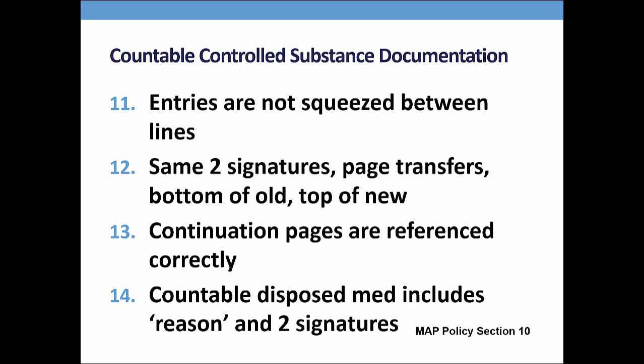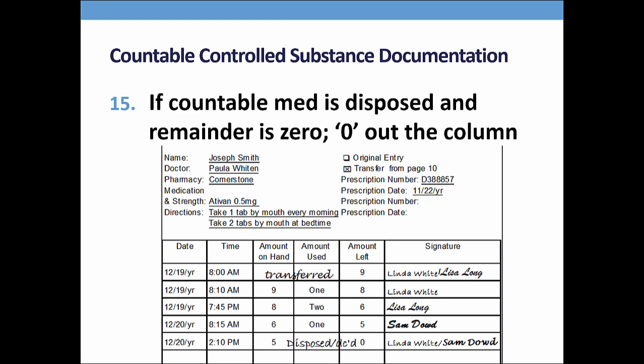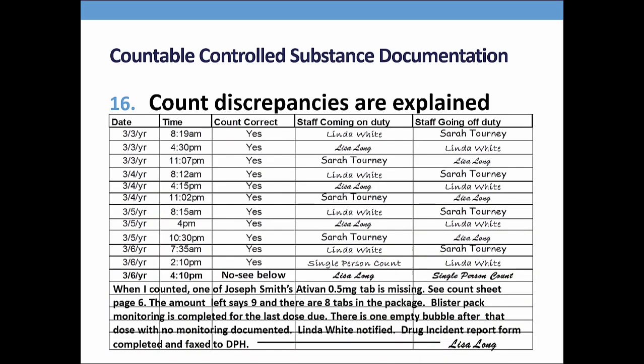Continuation pages must be referenced correctly in the index and at the bottom of each page. When a countable medication is disposed of, two signatures are also required. The entry must explain the reason for disposal, such as refused, discontinued, or dropped. I will look for the same reason on a corresponding disposal record. The last number entered in the amount left column must indicate how many tabs are currently on hand. If the medication has been disposed and the remainder is zero, do not forget to zero out the column. If there is a medication supply discrepancy, this should clearly be explained in the count book including who was notified.